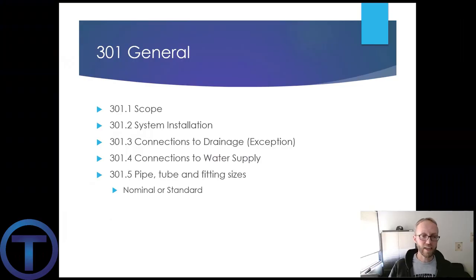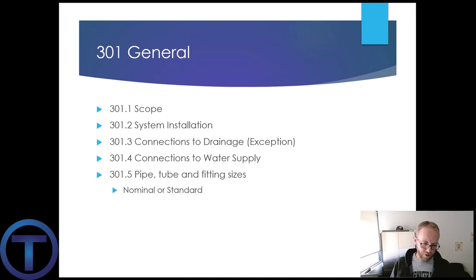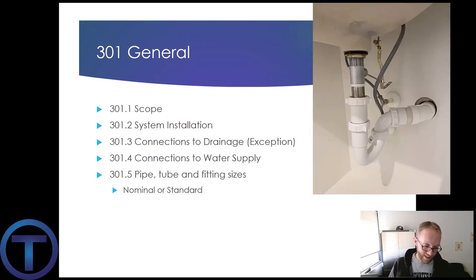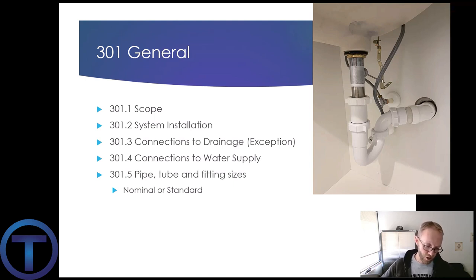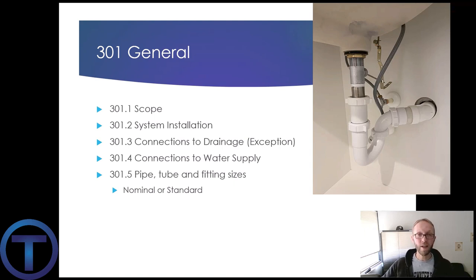301.3 Connections to drainage. Basically every fixture has to have a direct connection to the sanitary drainage system. They give a few exceptions, and all of those exceptions fall over into chapters 13 and 14 of the International Plumbing Code, which is about gray water.